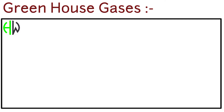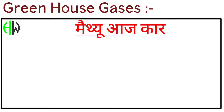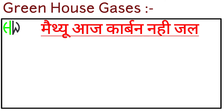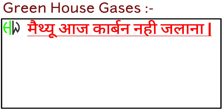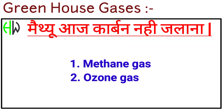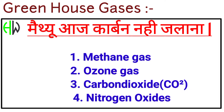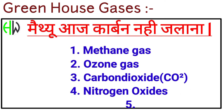For this trick, all you need to remember is a simple code: Matthew Aaj Carbon Nahi Jalana. Matthew stands for methane gas, Aaj stands for ozone gas, Carbon stands for carbon dioxide, Nahi stands for nitrogen oxides, and Jalana stands for some air pollutants.